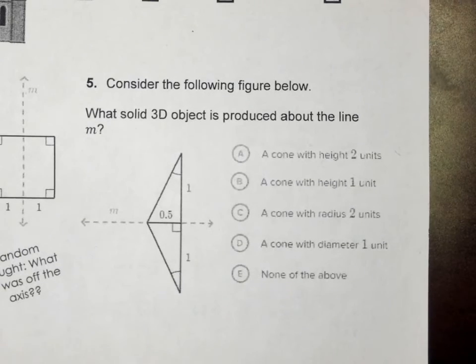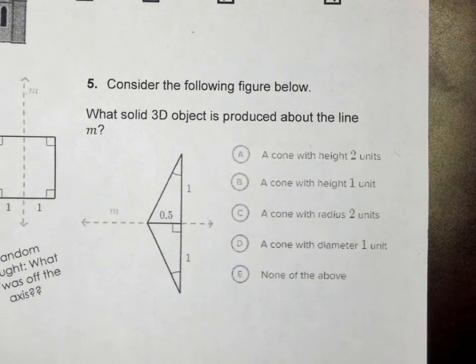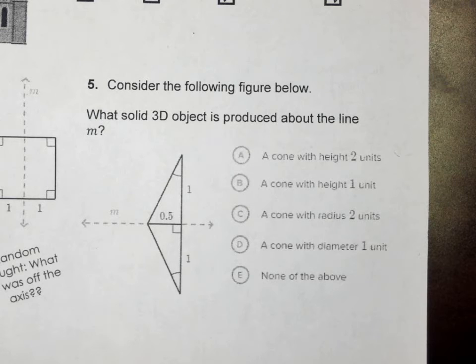All right, don't let number five blow your mind. Number five: consider the following figure below. What 3D solid shape object is produced about the line M? If I spin this triangle over line M, what 3D shape would I make? Hopefully everybody's saying a cone. If not, then I don't know how to paint that picture for you.